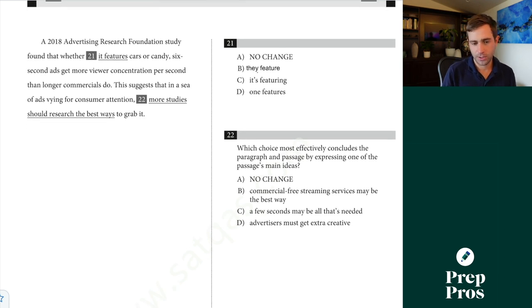All right, pronoun question here because we see it versus they. A 2018 advertising research foundation study found that whether blank features cars or candy, six-second ads, this is what the they is referring to. So that's why it's they there. We can't say six-second ads is plural, so we can't use it. You can also kind of see a little bit of a pattern that all the other answers are singular. The odd one out, you can pick. This is something which we use for subject-verb agreement if you struggle to get those correct the more technical way.